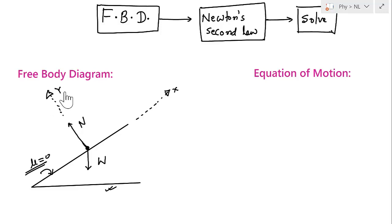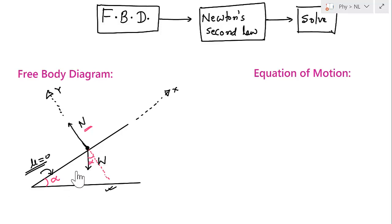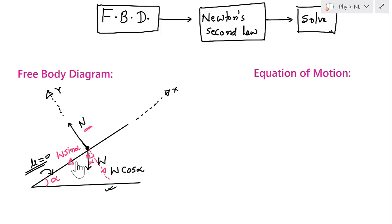We take the components of all forces along the x and y axes. The normal reaction N is already along the y-axis. The weight W is not along either axis, so we decompose it. Since the angle of inclination is alpha, the component of W along the y-axis is W cos alpha, and the component along the x-axis is W sin alpha. We cross out the original W vector since its effect has now been captured by the components.